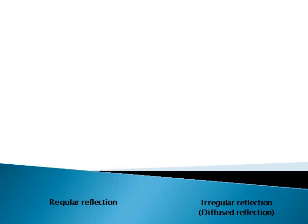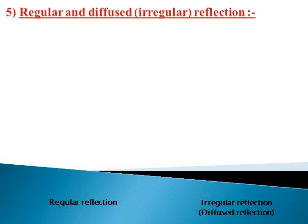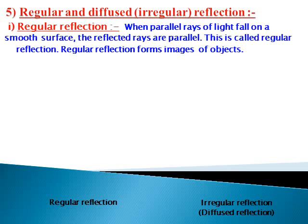Light always follows the laws of reflection. We can divide the phenomena of reflection into two types on the basis of reflecting surface. First, regular reflection. When the parallel rays of light fall on a smooth surface, the reflected rays are parallel. This is called regular reflection. Regular reflection forms images of the objects.